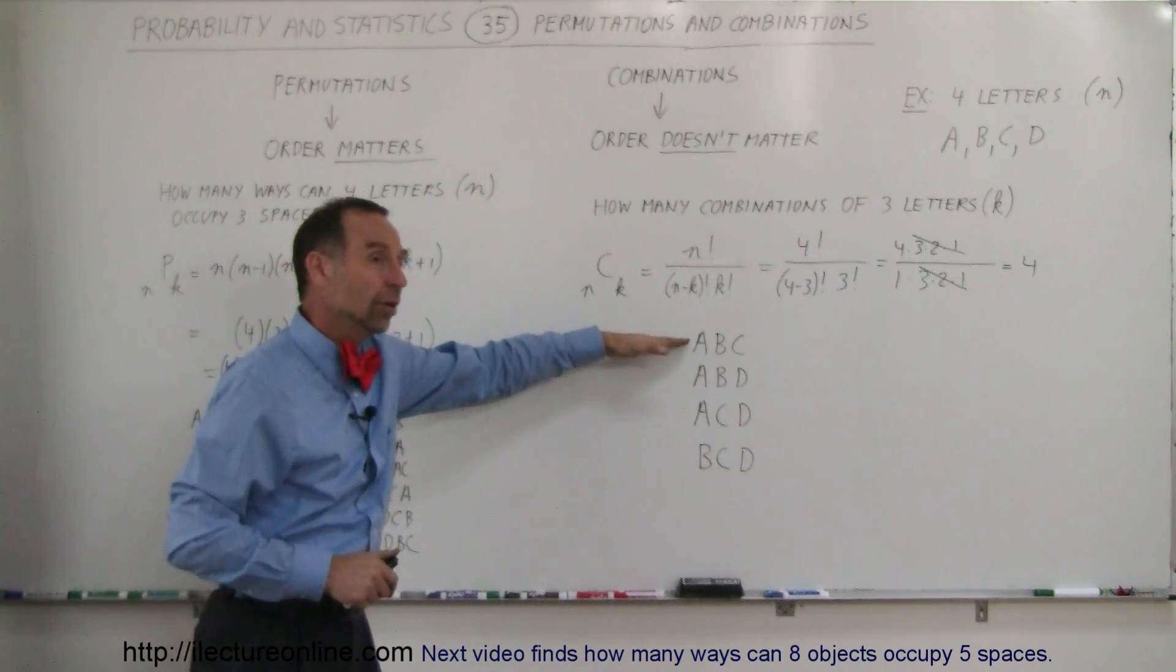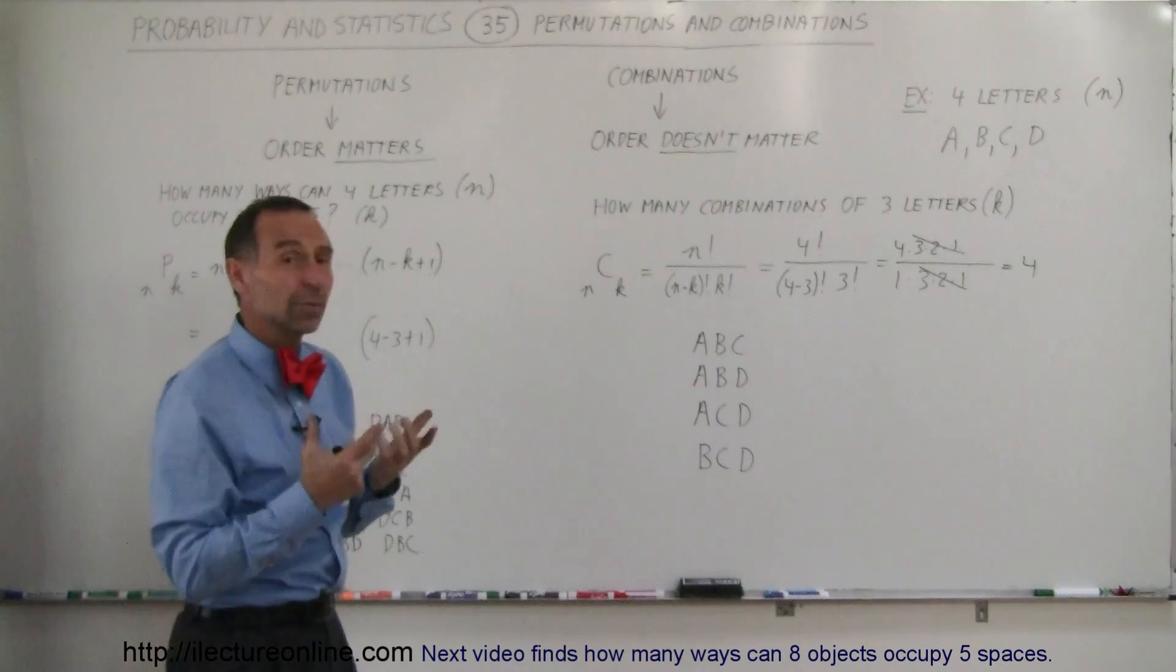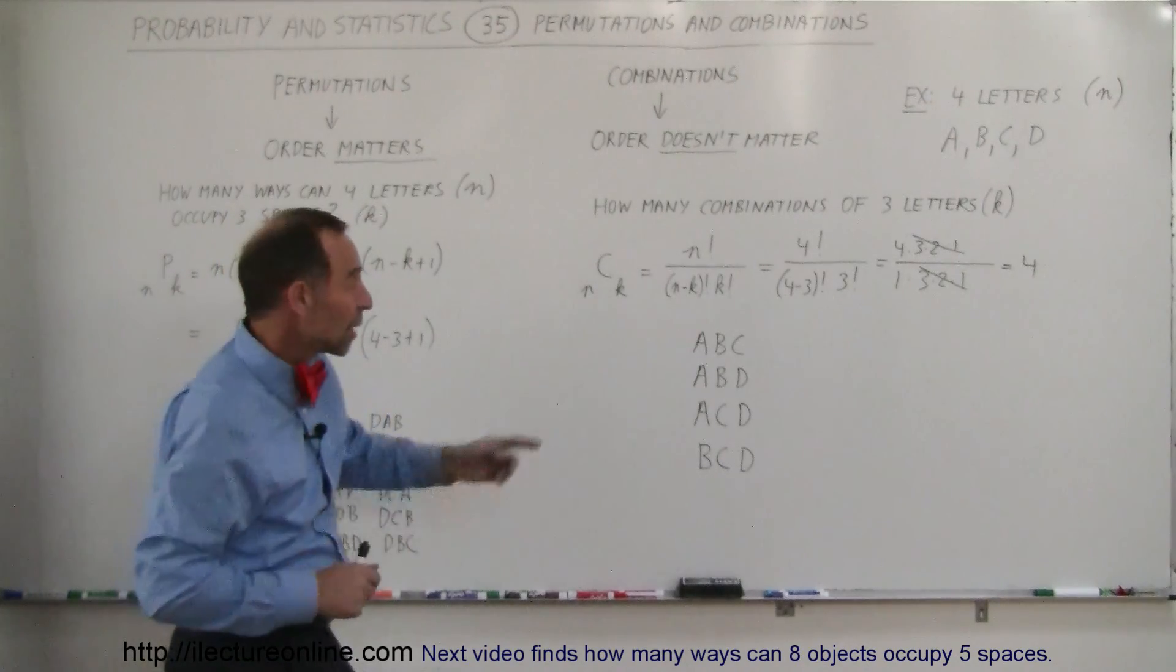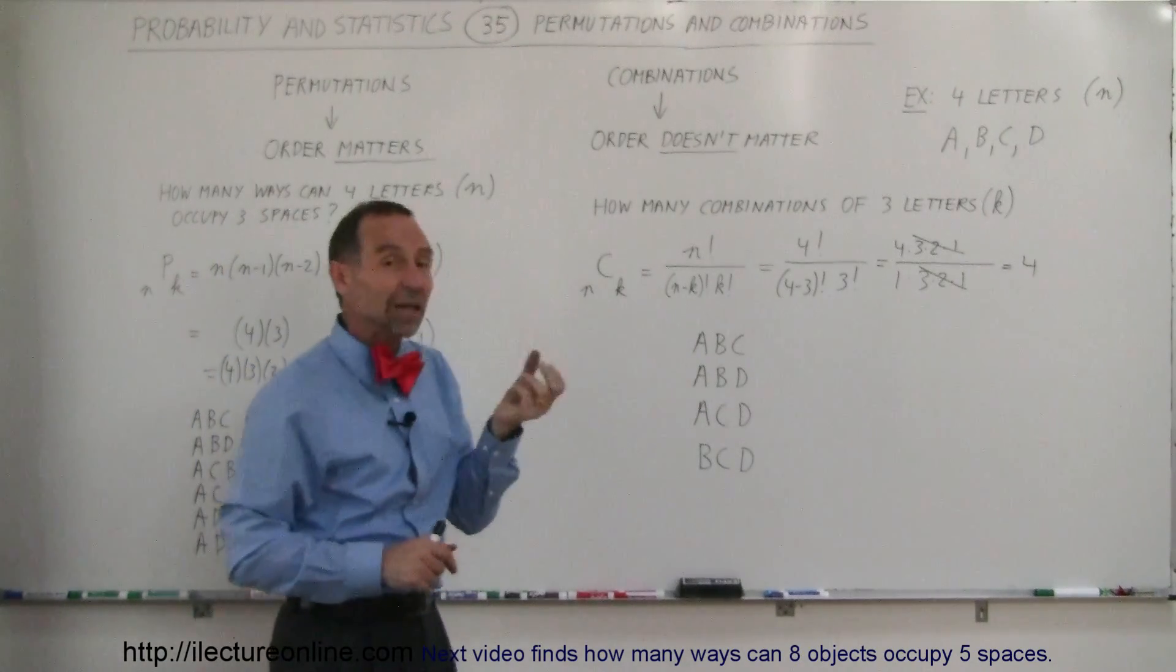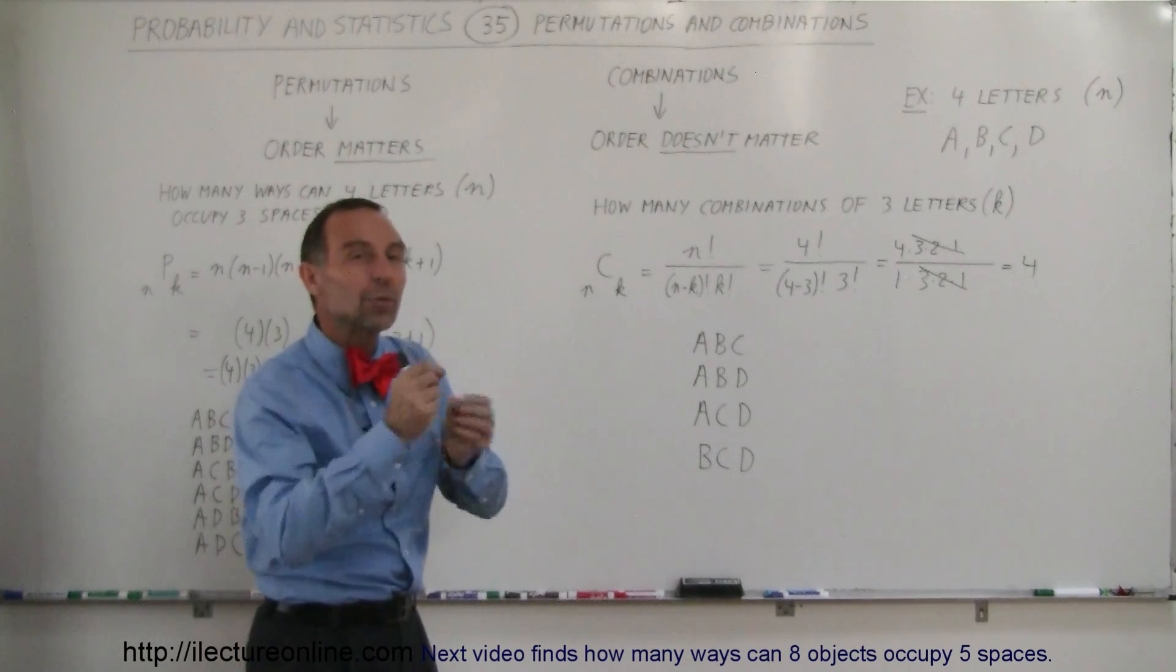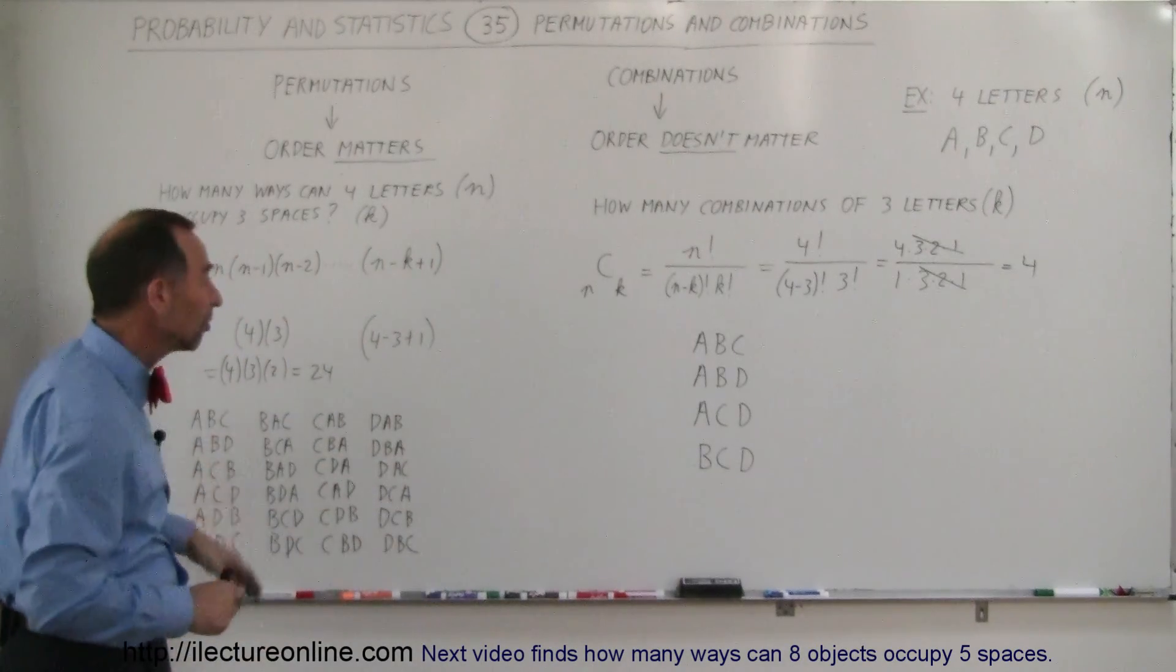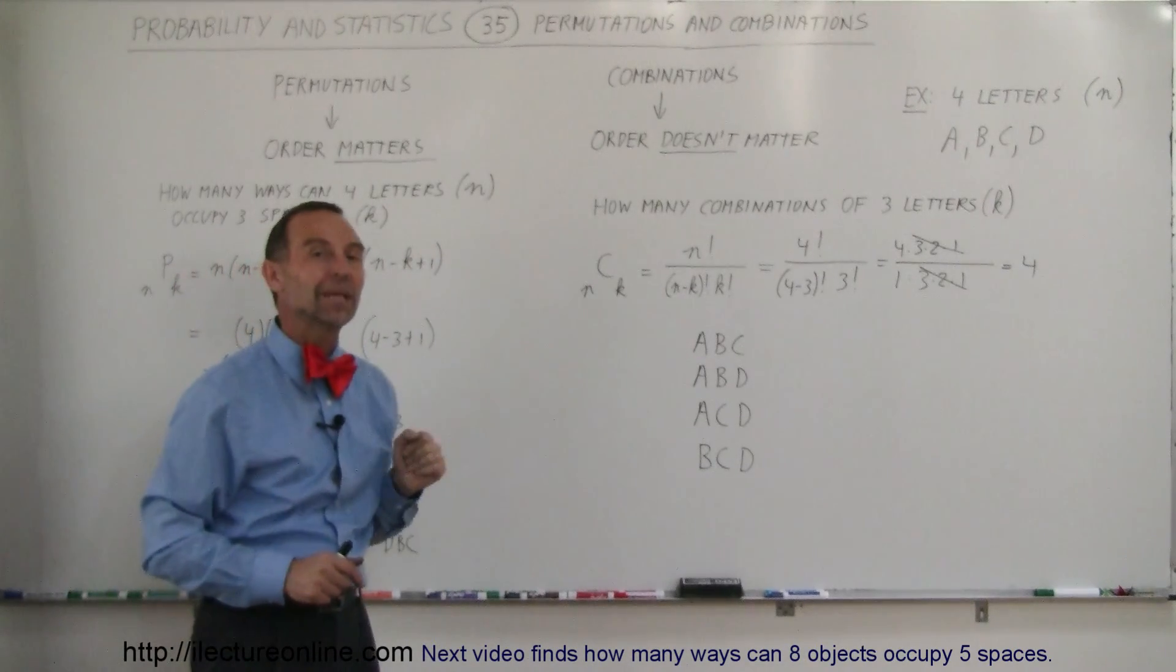In each combination, there are six different ways in which you can arrange the letter. How do you come up with six? With three different spaces, it's three factorial. That means three different ways in which you can rearrange the letters. So six plus six plus six plus six gives you 24 permutations, but only four combinations.